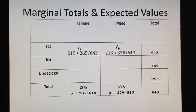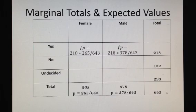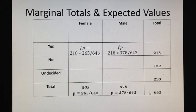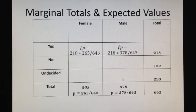Using only marginal totals and the total number of cases, we can calculate the expected values using proportional reasoning. For example, for females who answer yes, the number depends on the total number of yes answers times the proportion of female, which is 265 divided by 643. The same applies for male yes answers: total number multiplied by the proportion of male. We continue with all other categories of the second variable.